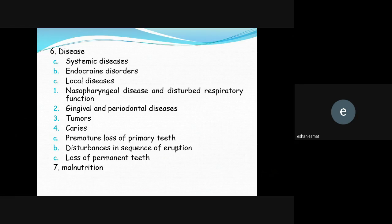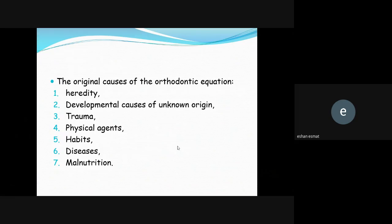The original causes of orthodontic problems are: heredity, developmental causes, trauma, physical agents, habits, disease, and malnutrition. When asked about the original causes of orthodontic problems, you should answer with these seven categories.